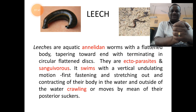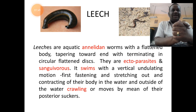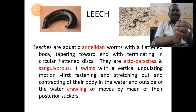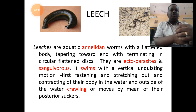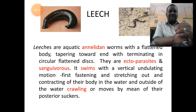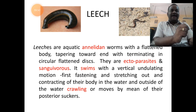Leeches live in water and in damp or moist soil. When present in water, they swim vertically with undulating motions, which refers to fastening and stretching out, then contracting their body. When present on land, they either crawl or show a kind of undulating movement on the damp soil, using the help of the posterior sucker attached to the body.